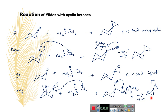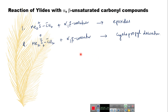So this is the application where you can synthesize epoxides from cyclic ketones with ylides. Consider another application: the reaction of ylides with alpha-beta unsaturated carbonyl compounds. Let us consider two cases. Dimethyl sulfonium methylide when treated with alpha-beta unsaturated compounds generally produces epoxides as main products, whereas dimethyl sulfoxonium methylide with alpha-beta unsaturated carbonyl compound generally leads to cyclopropyl derivatives.